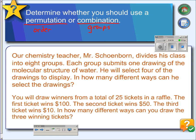So if Mr. Schoenborn divides his class into 8 groups and has each group draw one drawing of a molecular structure of water, and then from that he selects 4 drawings to display, in how many ways can he select the drawings? Well, the drawings will be put up around the room. There's no particular order. There's no prize for first, second, and third. So these are just groups.